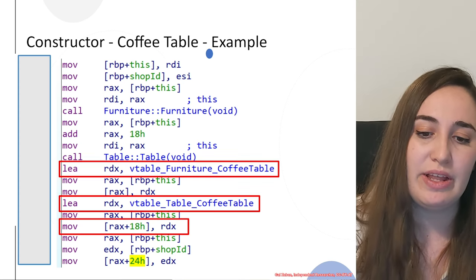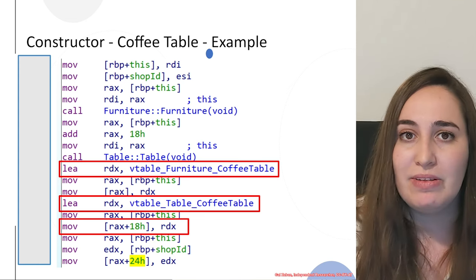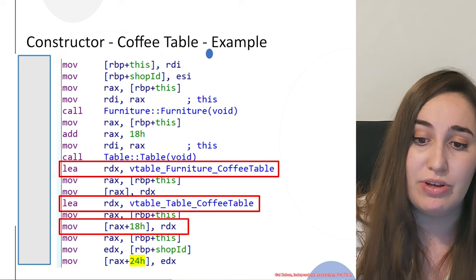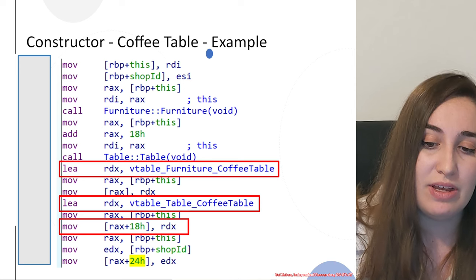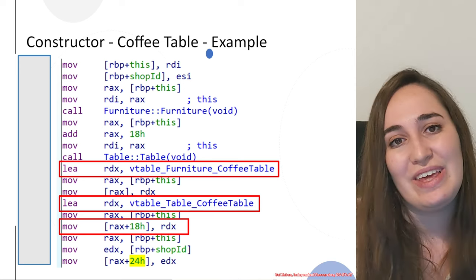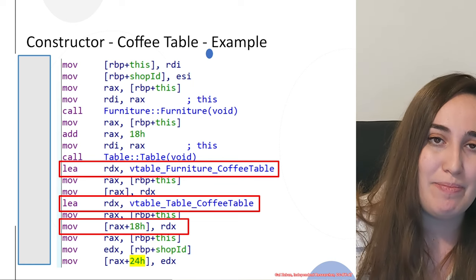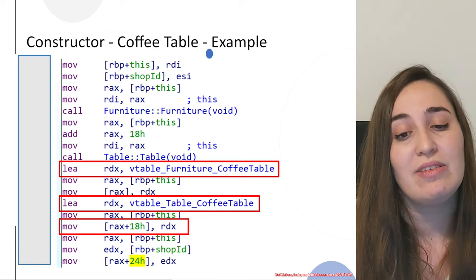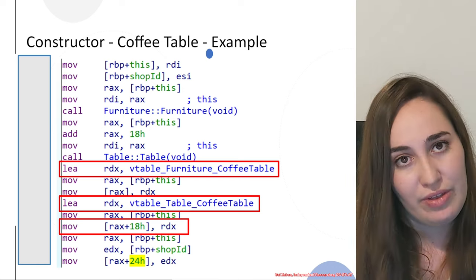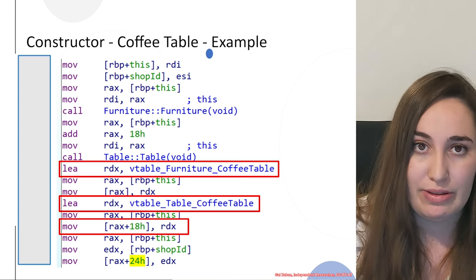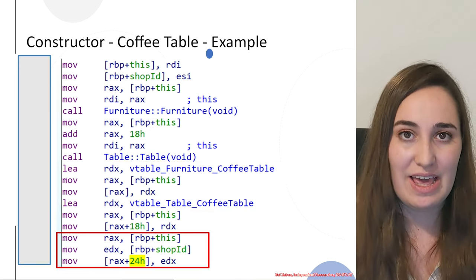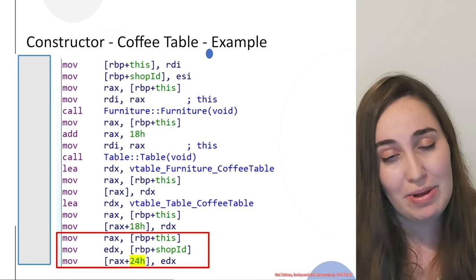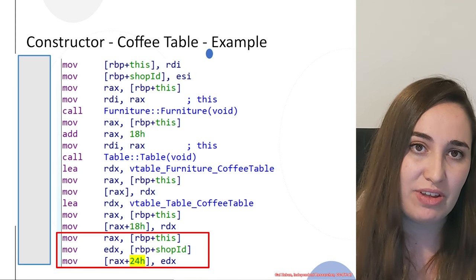Afterwards, a few other things happen. The V tables are a main part when dealing with multiple inheritance. In this case, we have the V table for the furniture-coffee table and the V table for the table-coffee table, meaning two V tables relevant for each base class. These are stored at the correct offset before the members of each relevant base class: the first V table at offset 0, and the second one relevant for the table constructor at offset 0x18. Finally, the derived class member 'shop ID' is added at 'this' pointer offset 0x24.